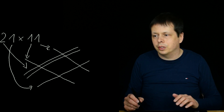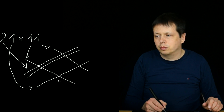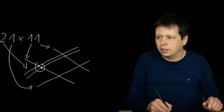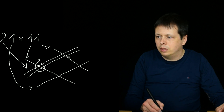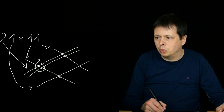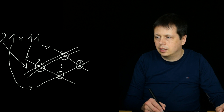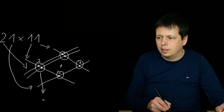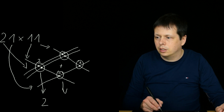Now you count the intersections — where the lines cross. Here we have one, two, so we sum it as two. Then in the middle we have two intersections, and on the right we have one. So middle is two plus one, which equals three.